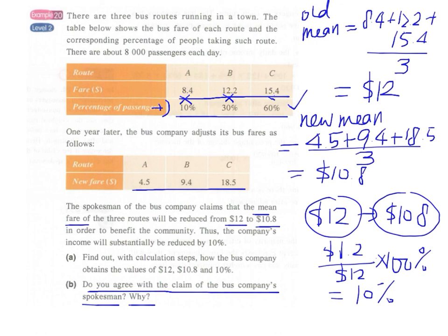We should not agree because the weighted mean should be used. We have to take into account the percentage of passengers.